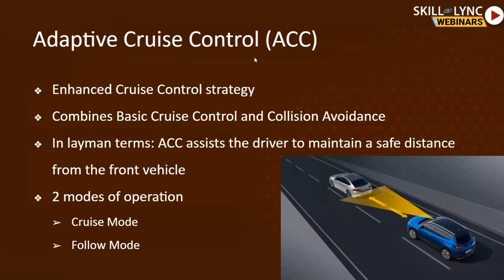ACC has two modes. Cruise mode controls the speed of the vehicle at a set speed. Follow mode controls the speed of the vehicle to maintain a set distance from the vehicle in front. These two modes form an essential basis for CACC itself.